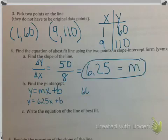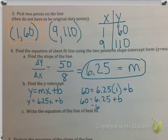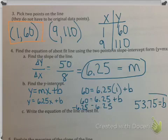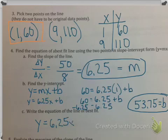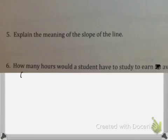So we have m, and we have our b. And now we need to write the equation for our line of best fit, which we just plug in our m and our b. And so our equation will be y equals 6.25x plus 53.75.